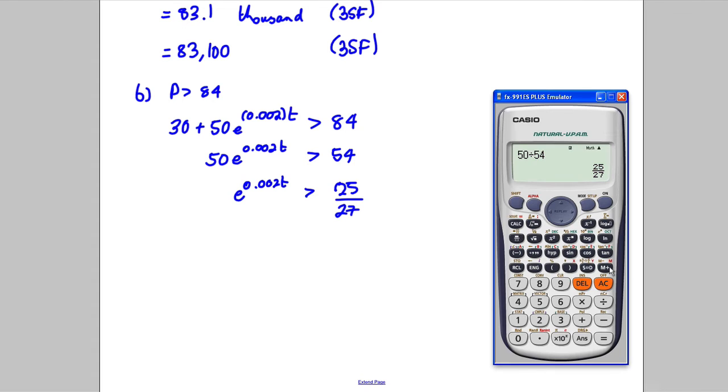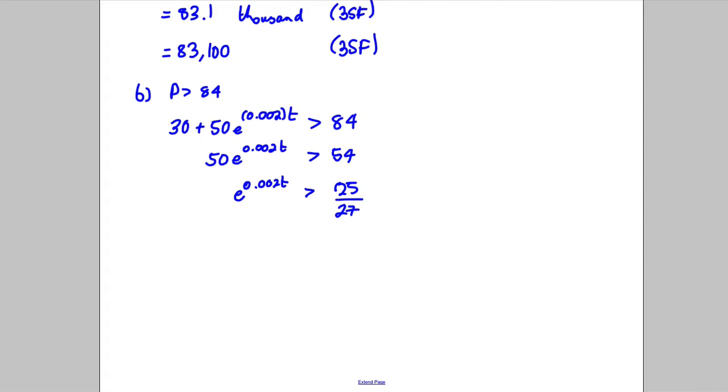Sorry, hold on, something's gone wrong here. It's not, it's 54 over 50, like that. And you get 27 over 25, so I wrote that the wrong way, it's 27 over 25.